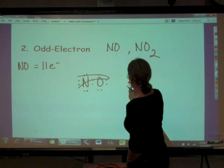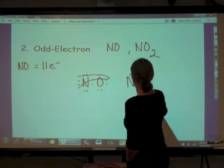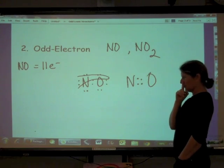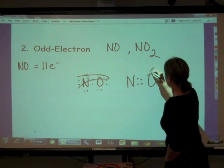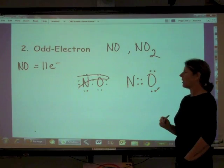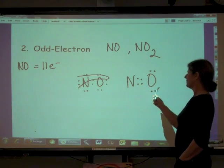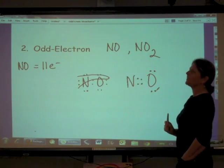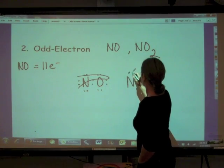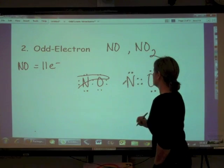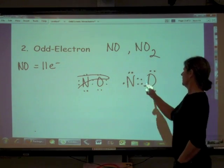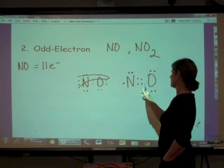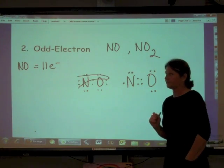So what this thing actually ends up looking like is this. It's going to be N. We're going to have a double bond with oxygen. Oxygen is going to have a full octet. Two, four, six, eight. And what nitrogen will actually do is nitrogen goes with seven. Two, four, six, seven. One, two, three, four, five, six, seven, eight, nine, ten, eleven.